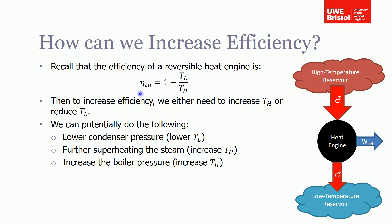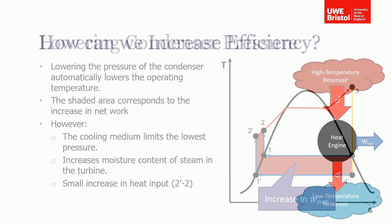For a Carnot heat engine, we can only increase efficiency either by increasing T_H or by reducing T_L. So if we apply that to our Rankine cycle: if we lower the condenser pressure, we're effectively lowering T_L; if we further heat the steam before it goes into the turbine, we're effectively increasing T_H; and we can also increase the boiler pressure, which also increases T_H. These are the three things we can do to increase the efficiency of our Rankine cycle.